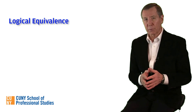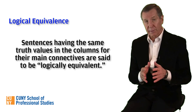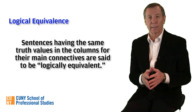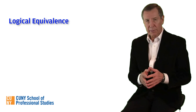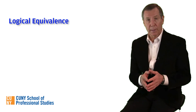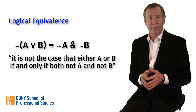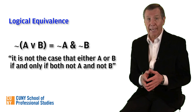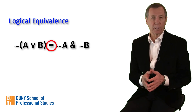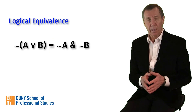A truth table can also tell us whether a group of sentences is logically equivalent — that is, whether they have the same truth values in the columns for their main connectives. Let's use one of DeMorgan's equivalences, which we introduced in our last unit, as an example. We read this as: it is not the case that either A or B, if and only if, both not A and not B. We've interposed a triple bar between the two expressions to indicate their logical equivalence, which is what the biconditional means. But how do we prove it?